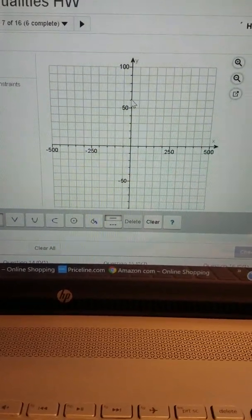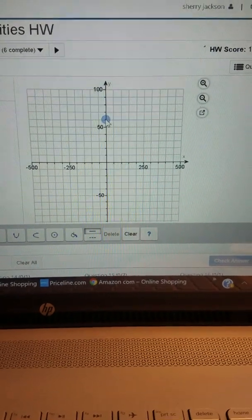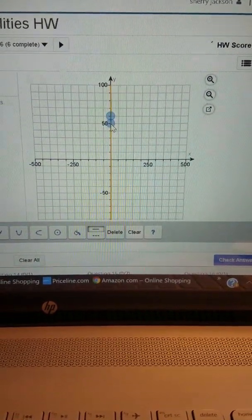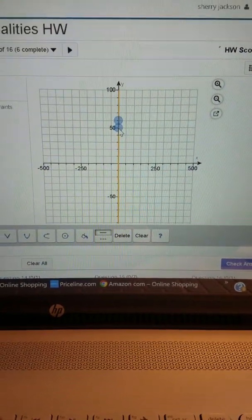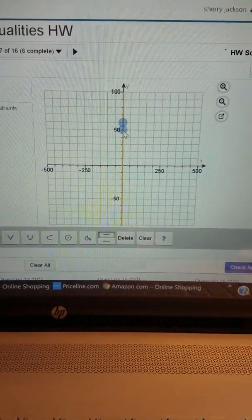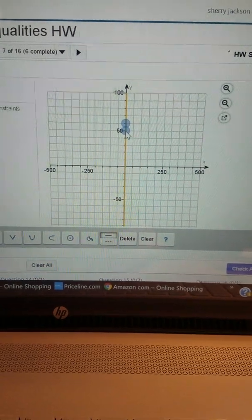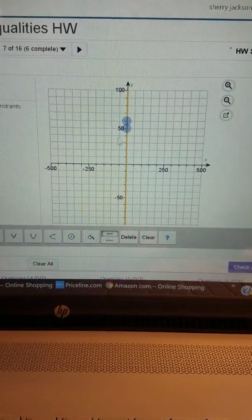I'm going to start off by graphing two points on the vertical axis for the line x equals 0. Technically to the right of that should be shaded but I'm going to hold off on the shading until I get all the lines on.